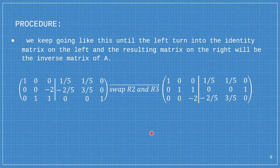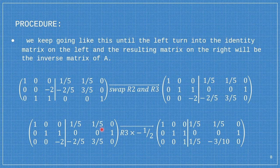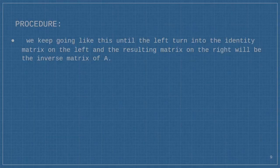We're going to keep going like this until the left side becomes an identity matrix, and the right side results in the inverse of matrix A. Since I don't have 1 on the diagonal, I'm going to swap row 2 and row 3. Then, to make negative 2 into 1, I will multiply the whole row 3 by negative 1 half. That gives us 1, 1 over 5, negative 3 over 10, and then 0.